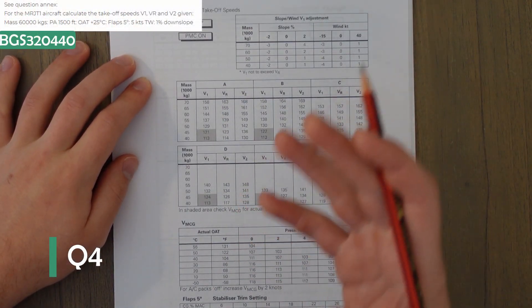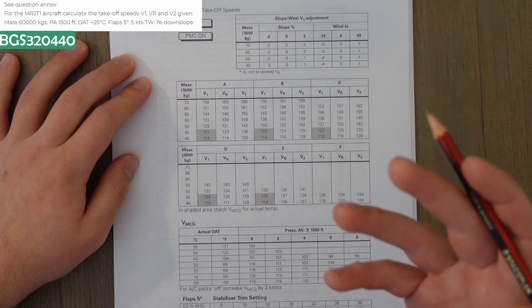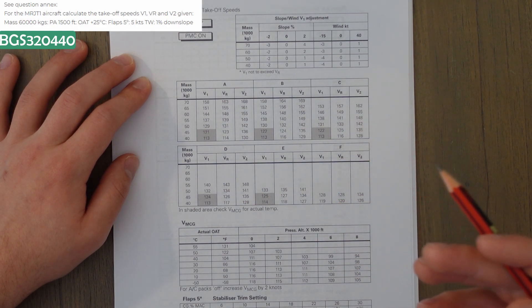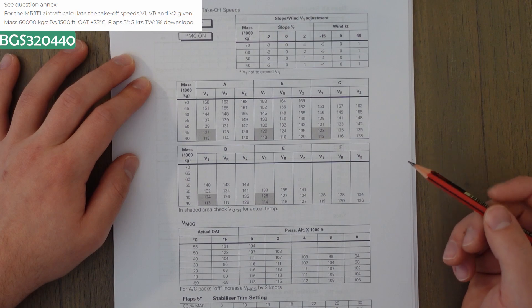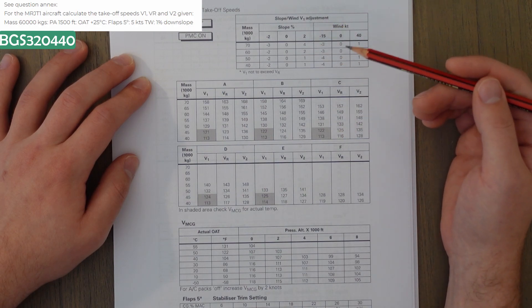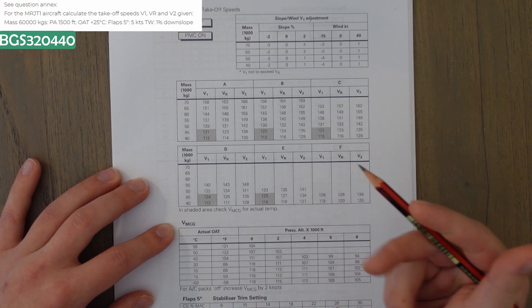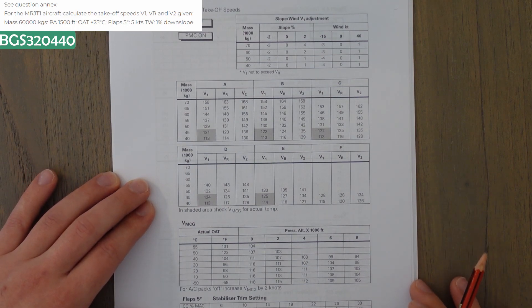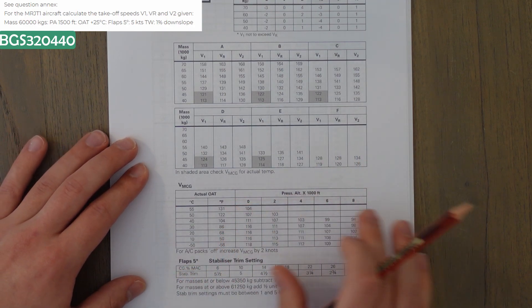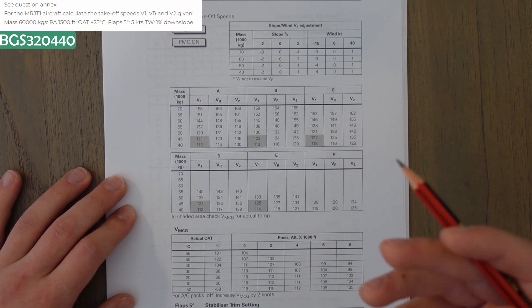This next example isn't using a graph as such, but I thought it was a good one to use anyway. So, we're asked to calculate the V-speeds with the following information. We weigh 60,000 kilograms, we're at a pressure altitude of 1,500 feet, it's 25 degrees Celsius, it's flap 5, we have a 5 knot tailwind, and it's a 1% downslope. So, a quick look at these tables, and I can see that we have some slope wind corrections for V1, so we're going to have to take that into account. And then, down the bottom, we have stuff talking about VMCG. We're only asked for V1, VR, and V2, so we can essentially ignore this table, and right at the bottom, just off-screen there, there we go, we can see we've got a stabilizer trim setting, which, again, we're not asked for. So, what I'm going to do is just ignore these bottom two, but I will have to think about anything for this top section.